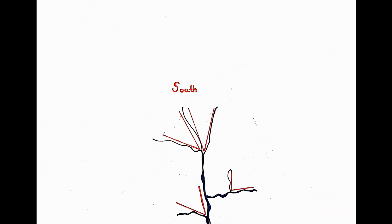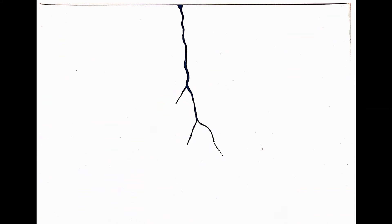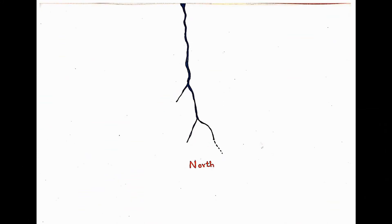Observe the angle of meeting of the streams. In this case, the river flows from north towards south — the angle of meeting of the streams indicates the south direction. In the second example, streams meet the main river in the north direction, so the direction of the river is north.